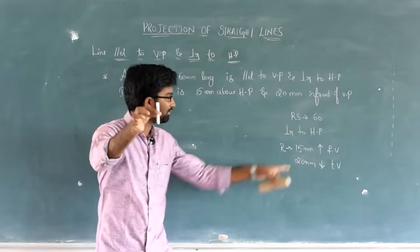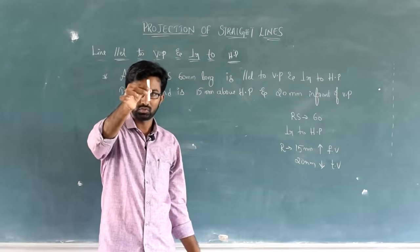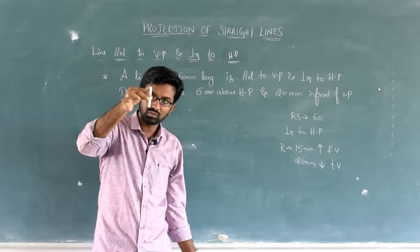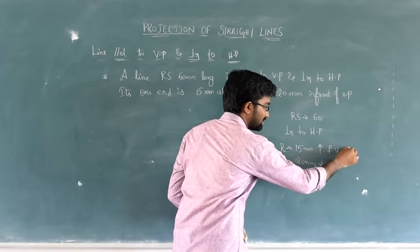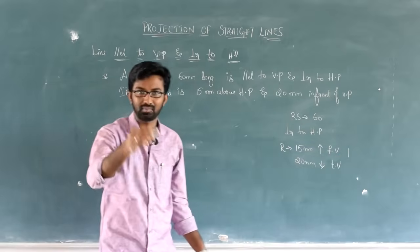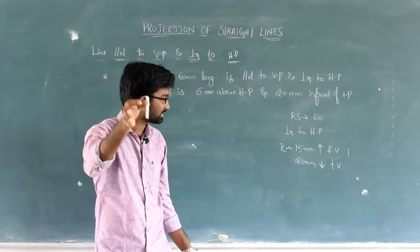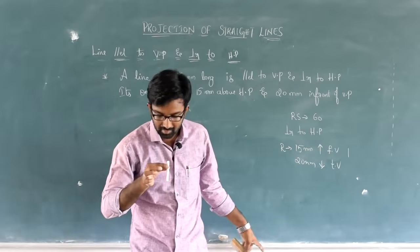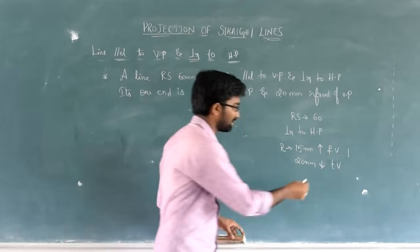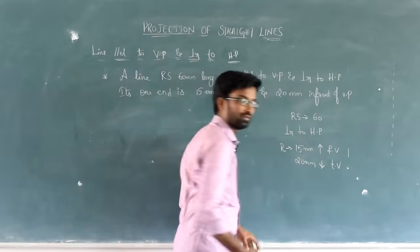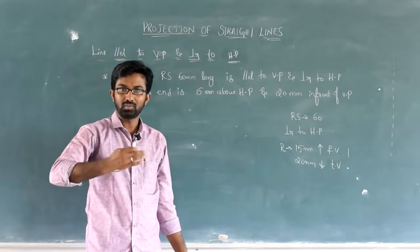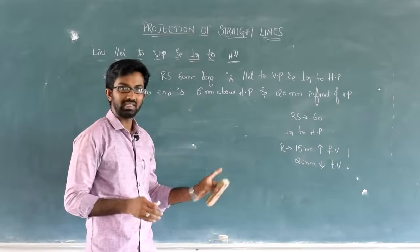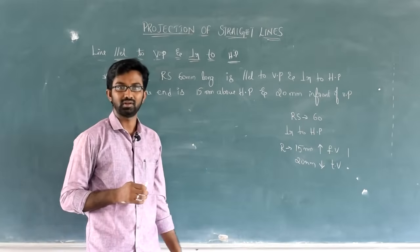Remember, this is the position - perpendicular to HP. So, it should be like this. In front view, when you look, it appears as a vertical line. Since it's front view, I'll put some symbol for front view. It appears as a vertical line.